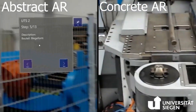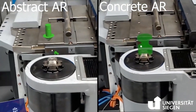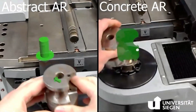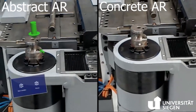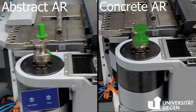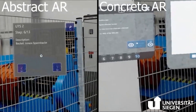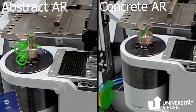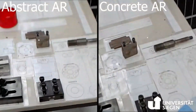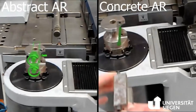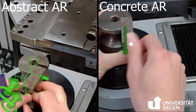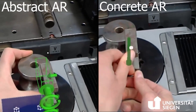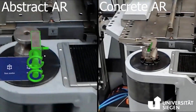In our study we are comparing four different augmented reality visualization types for setting up an industrial bending machine using the Microsoft HoloLens. The first visualization type includes concrete 3D models from CAD data to show where and how to mount different parts on the machine, as you can see here on the right side. The second visualization type only includes abstract elements like arrows and boxes to indicate where to mount the parts on the machine, as you can see here on the left side.